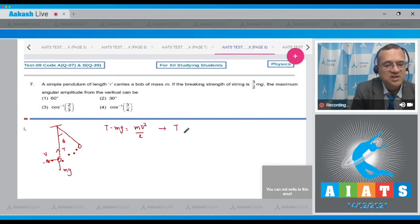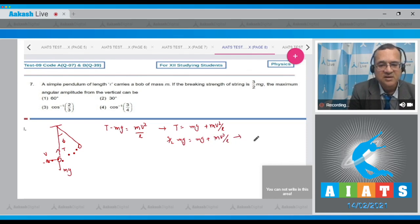So T equals mg plus mv²/L. T is given as 3/2 mg if you release from here. So 3/2 mg equals mg plus mv²/L. That implies g/2 equals v²/L. So v² equals gL/2. This is one equation.